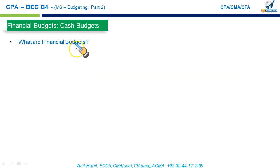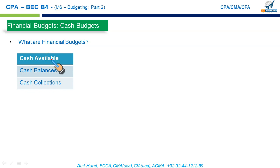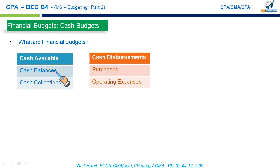In our previous lecture, Budgeting Part 1, we discussed there are four types of financial budgets: cash budgets, budgeted balance sheet, budgeted cash flow statement, and the capital budget. Specifically talking about cash budgets, they are basically the projection of your cash receipts over the period and your cash payments. Cash receipts would most probably be from cash sales or collections made from credit sales, or in some rare exam circumstances, cash inflow in the form of interest income, dividend income, rent receivable, commission receivable, or any other inflow. Cash collection primarily would be from cash sales and collections from credit sales.